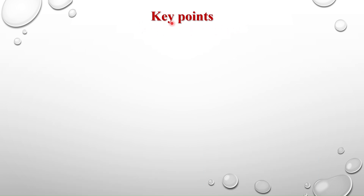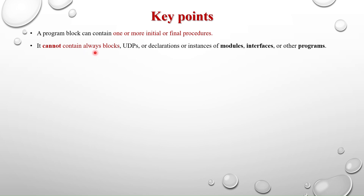Key points to remember when using the program block: a program block can contain one or more initial or final procedures, but it cannot contain always blocks, UDP declarations, or instances of modules, interfaces, or other programs. Inside the program block you can use multiple initial or final procedures, but you cannot use the always block and cannot instantiate modules, interfaces, or other programs.